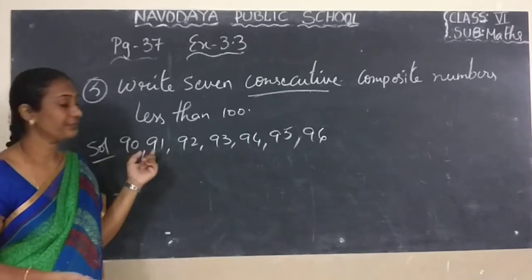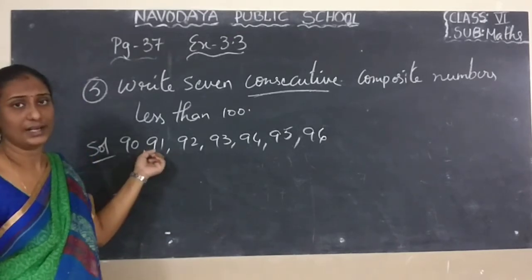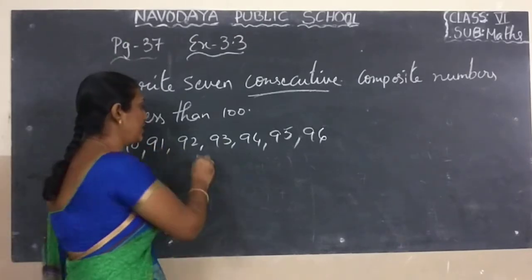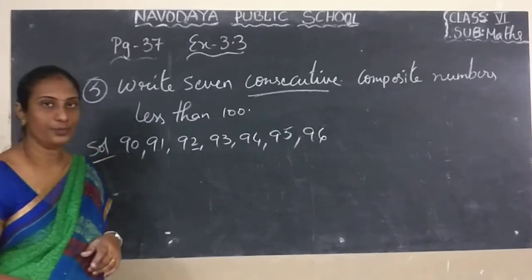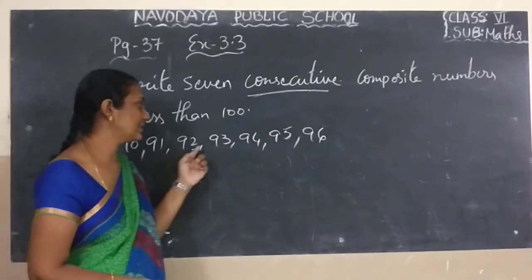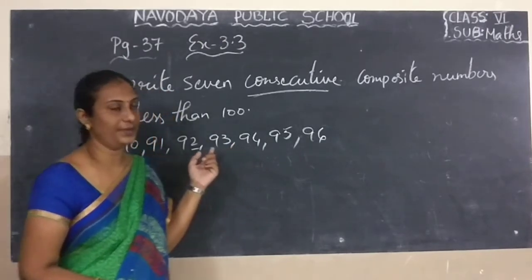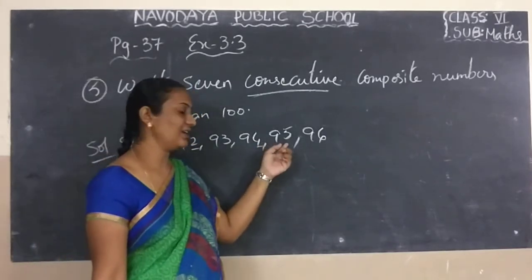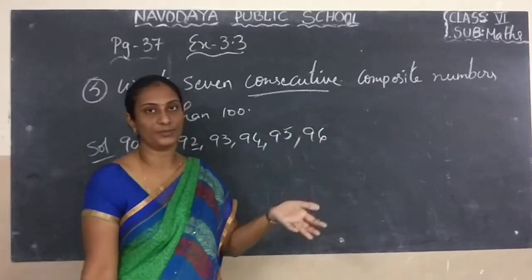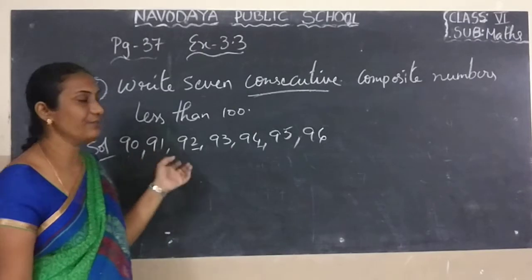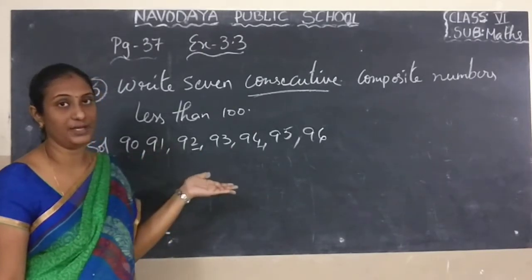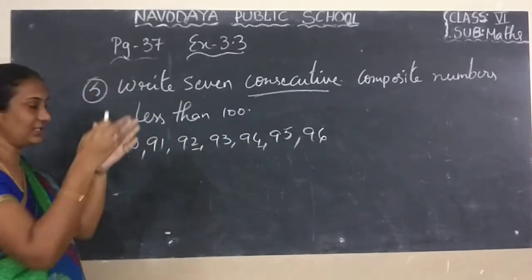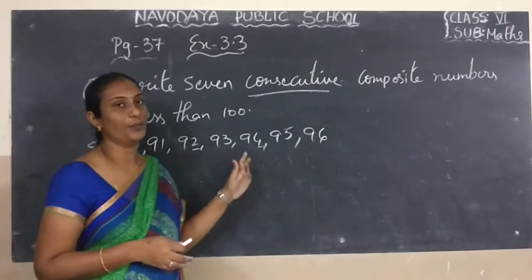92 — it is divisible by 2, so here also we are having more than two factors. 93 — in the 3 table it is divisible. 94 — it is divisible by 2. 95 — it is divisible by the 5 table. 96 — it is divisible by the 2 table. Means we are having more than two factors, so these are composite numbers. How many numbers? 1, 2, 3, 4, 5, 6, 7 — 7 numbers in order. So these are 7 consecutive composite numbers.